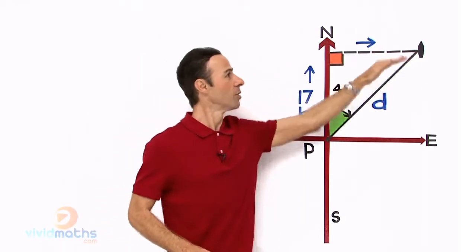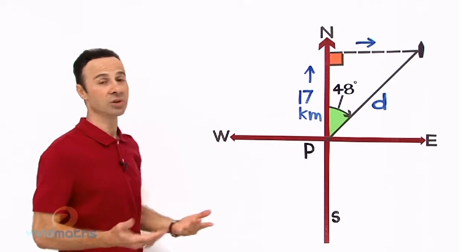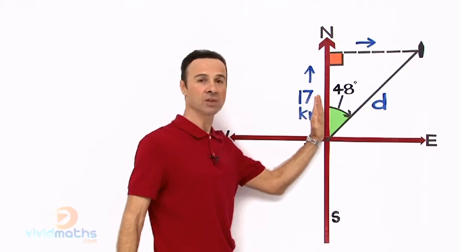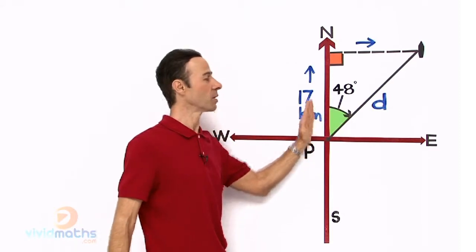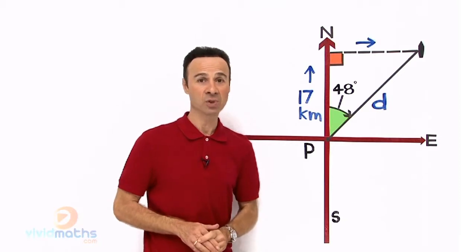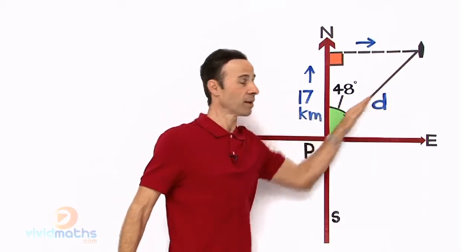That way for a certain direction, but we don't know and we don't need to know. What we do need to know is the bearing is 48°. It went north 17 km. Our mission and objective is to find this distance here, right there.